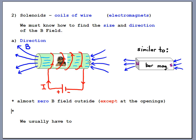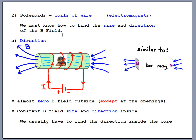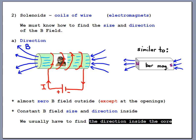Inside the solenoid the magnetic field is constant in direction and constant in size — which makes it ideal for experiments. There's almost no magnetic field outside unless you're near the openings. We'll almost always be working inside the core of these solenoids or right near the edges.